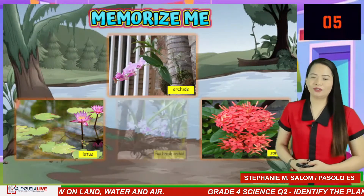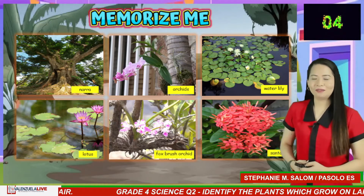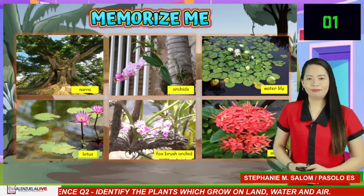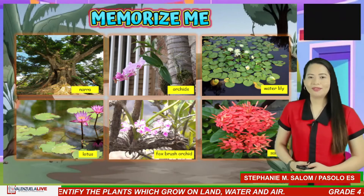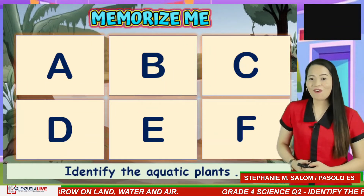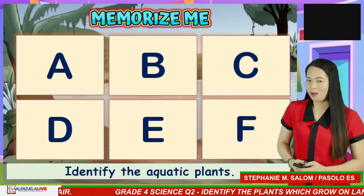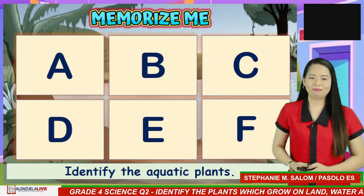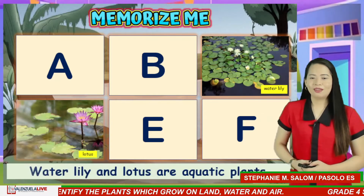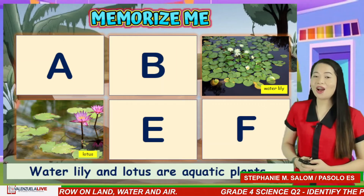Here's the next set of pictures. I will give you 5 seconds to memorize it. Time's up! Identify which of them are aquatic plants — those plants that grow in water. Type your answer in the comment box. If you answered letter C and D — fantastic! Water lily and lotus are aquatic plants.